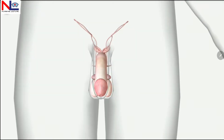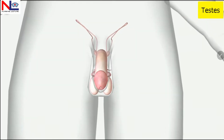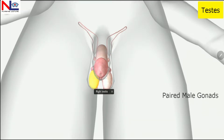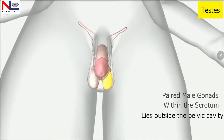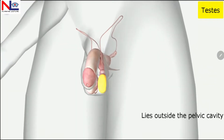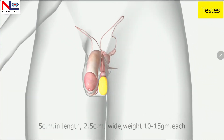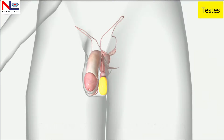Next, we talk about the testes. These are the paired male gonads which lie within the scrotum, outside the pelvic cavity. Each testis measures about five centimeters in length and 2.5 centimeters wide, and weighs about 10 to 15 grams.